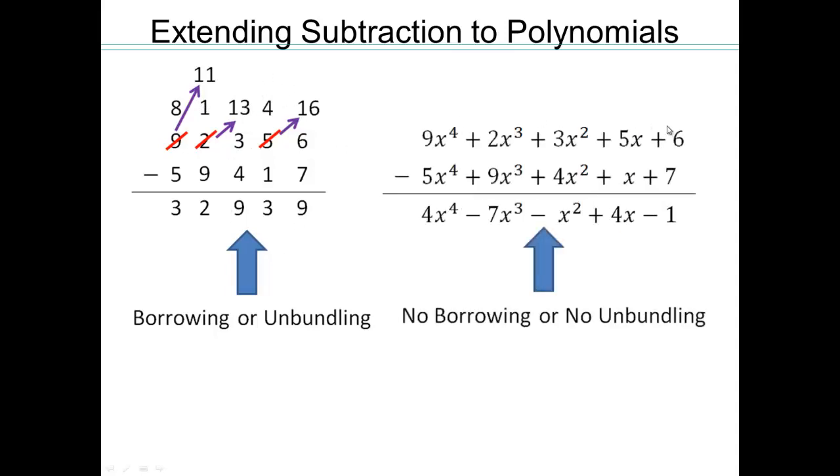But in polynomials, we just take this polynomial minus that whole polynomial. I cannot borrow so many x's to make so many units, or I cannot borrow so many x² to make 1x. Therefore, there is no unbundling process here or borrowing process. You just have to leave the numbers as is. Do you think that will work by not borrowing? Let's see.